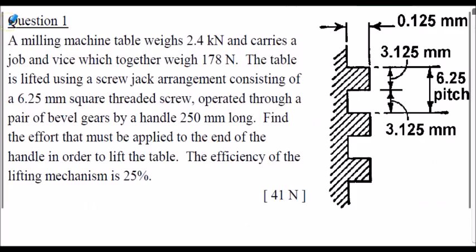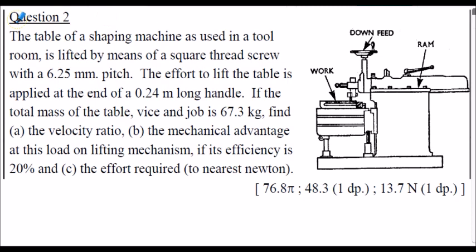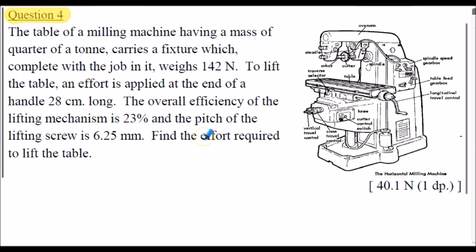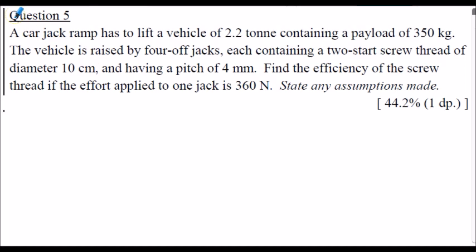Here are some tutorial questions for you to attempt and generate your own solutions. Question 1: calculate the effort to be applied (answer shown in brackets). Question 2: find the velocity ratio, mechanical advantage, and effort required to raise the load. Question 3: calculate the velocity ratio, mechanical advantage, and the effort applied to raise the load. Question 4: calculate the effort shown in brackets. Question 5: find the efficiency of the screw thread shown. Question 6: determine the efficiency shown — note there is a hint in the question.